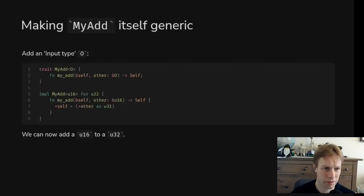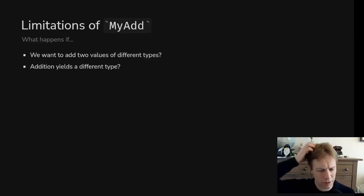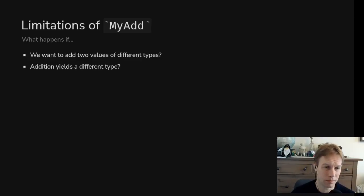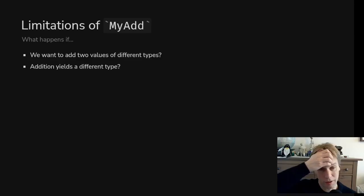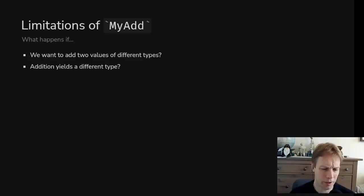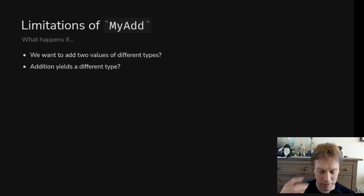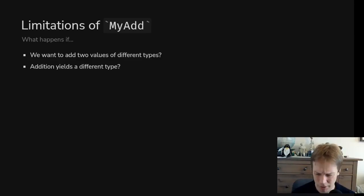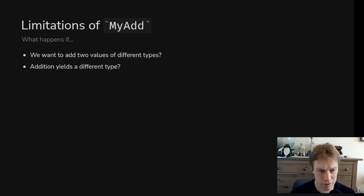That's not a complete picture of how we might want to do this. Here are some limitations. First, what if we wanted to add two values of different types? The code we've written can add two u32s or two i32s, but what if we wanted to add an i32 to a u32? Also, what if the result of that operation is a different type? You might want to say the return value is a bigger number, because when you add two very big u32s you might end up with something too big to be a u32, so you might need a u64 as your return value.